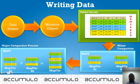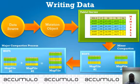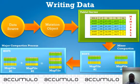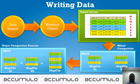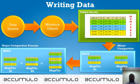We're discussing this so you have a better idea of how to apply iterators at scan time, minor compaction, and major compaction, and understand the impact. Note that this data-writing process is not a complete connected cycle — you don't necessarily have to perform a minor compaction before a major compaction. They are not necessarily a connected process.